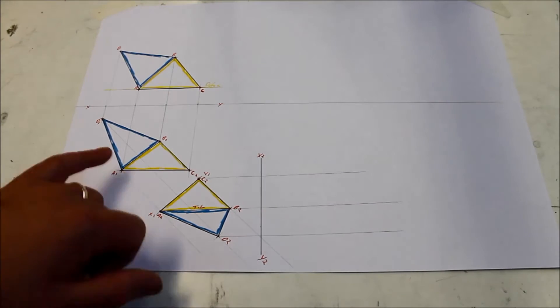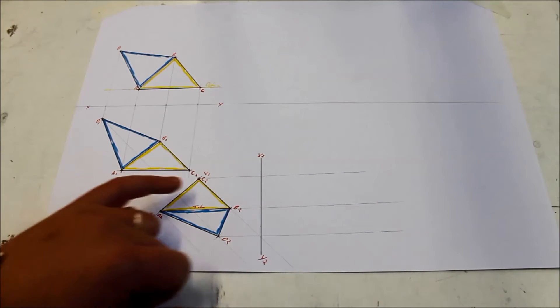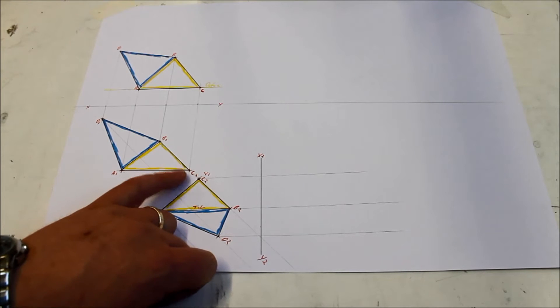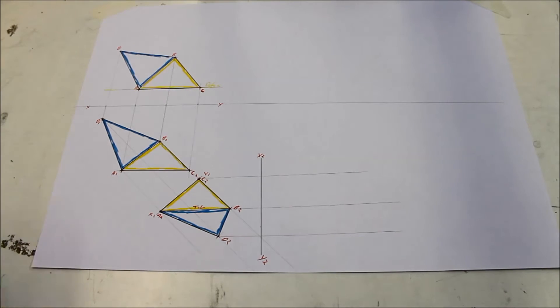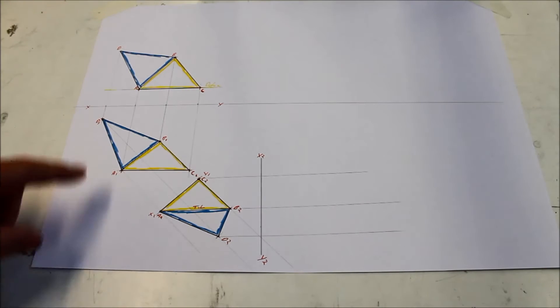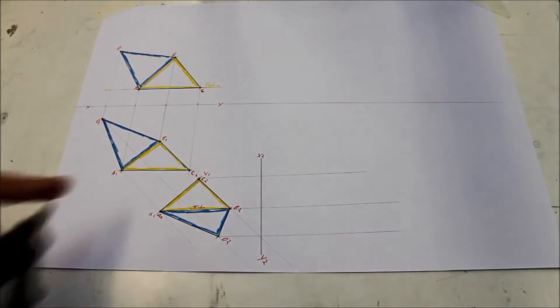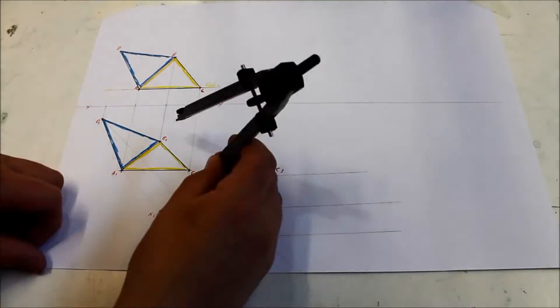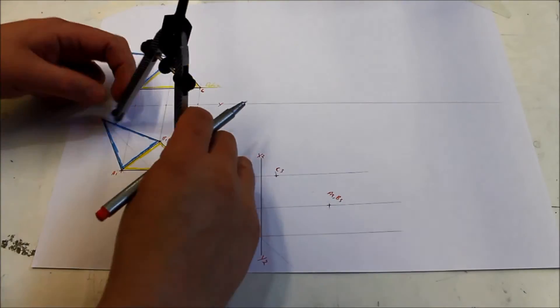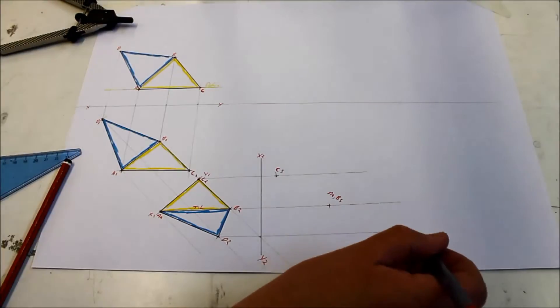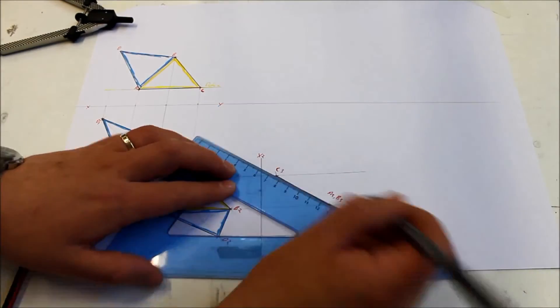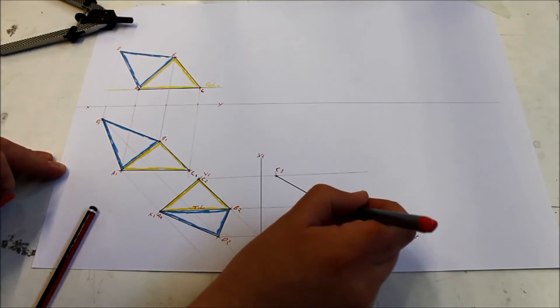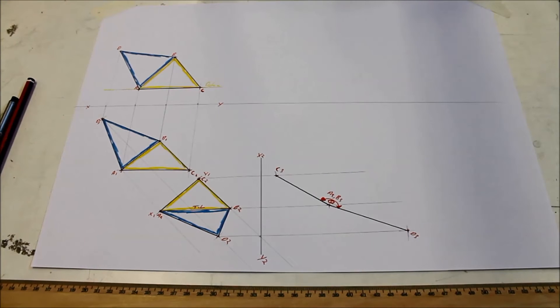So we're working from this X1 Y1 back to get our heights now for this auxiliary view. There's only a short gap there so we're not going to bother with that line. Get the heights for all points, all four points here.